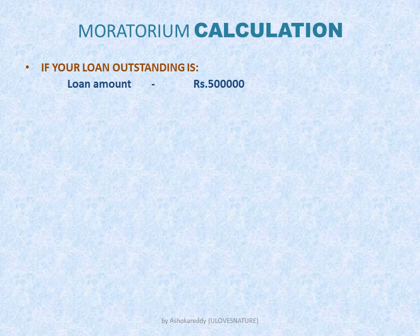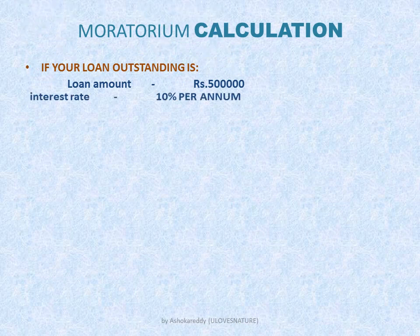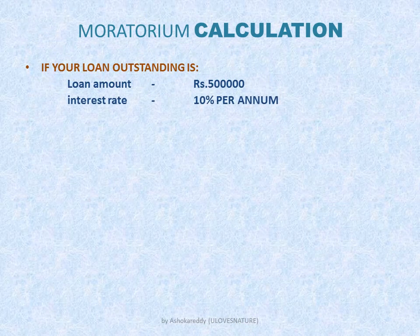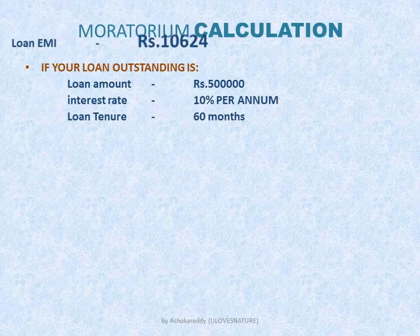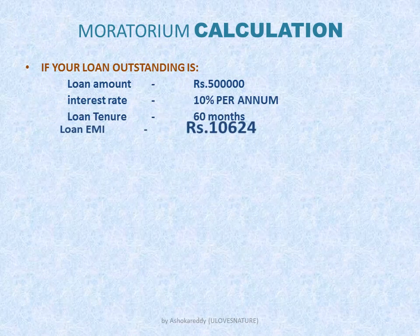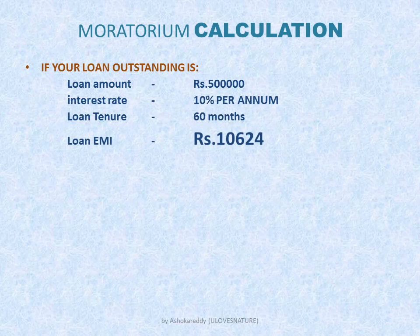If your loan outstanding is Rs. 5 lakh with an interest rate of 10% per annum and a loan tenure of 60 months, your loan EMI will be Rs. 10,624. That is your actual EMI.